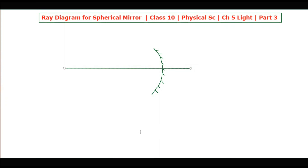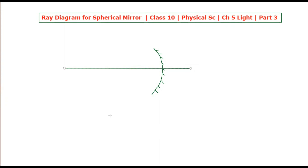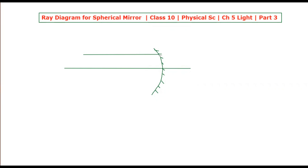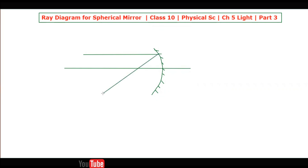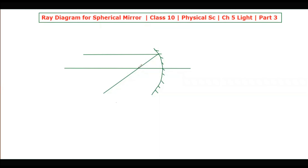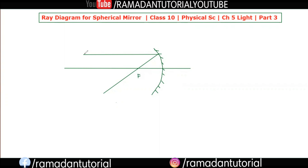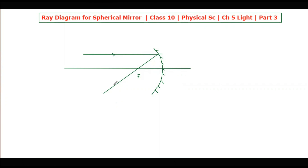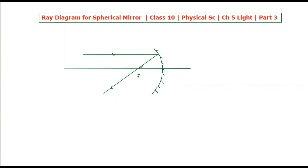The thing we have to bring into discussion is that in today's class we will discuss four rays of light. The first ray is the one that is parallel to the principal axis. That ray falls towards the focal axis, and when it falls towards the spherical mirror, after reflection it passes through the focal point.